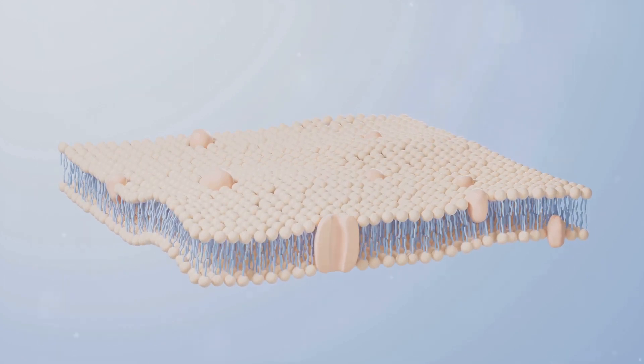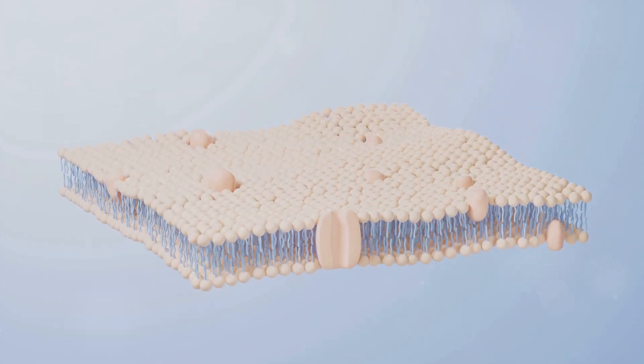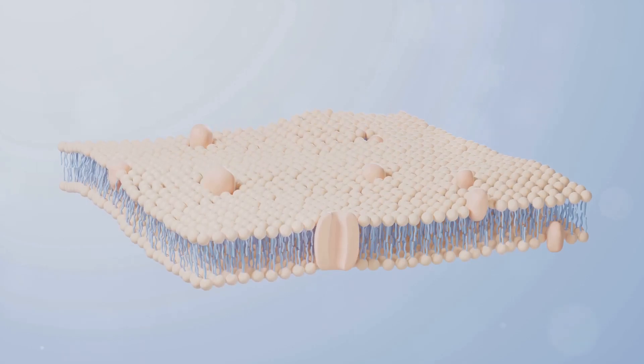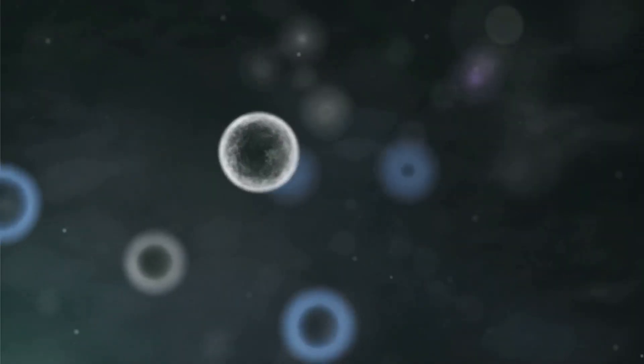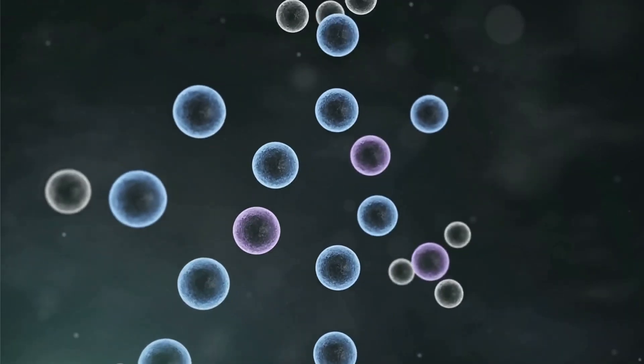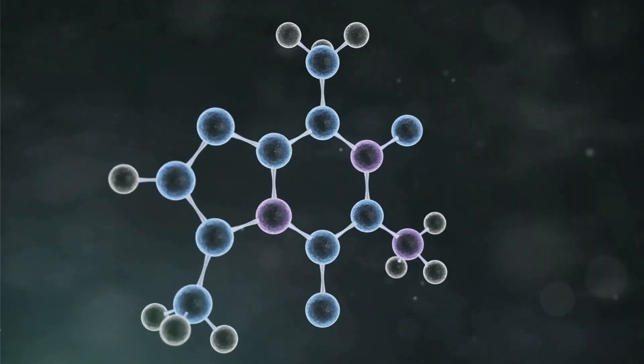This protein is a member of the tetraspanin family, a group of proteins that span the cell membrane four times, forming a distinct structural motif. These proteins are known for their role in creating microdomains on cell membranes, which are specialized areas that organize the cell surface.